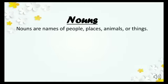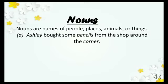Nouns are names of people, places, animals, or things. Every name — of any person, place, animal, or thing — is called a noun. For example: 'Ashley bought some pencils from the shop around the corner.' Ashley is a name, so it is a noun. Pencil is a thing, so it is also a noun. Shop and corner are places, so they are nouns too.